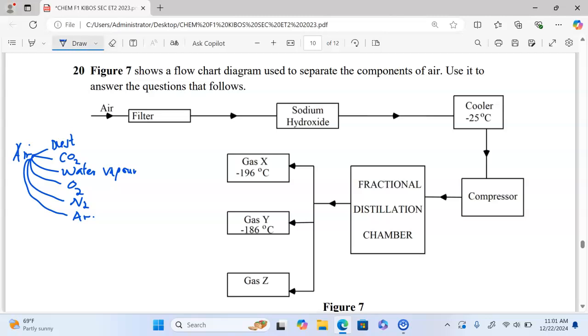But before we go to fractional distillation, certain components of the air must be removed. We begin with passing air through the filters to remove the dust particles. Then from there we pass air through concentrated sodium hydroxide to remove carbon dioxide. And of course, we cool the remaining part of the air to negative 25 degrees Celsius to remove water vapor.